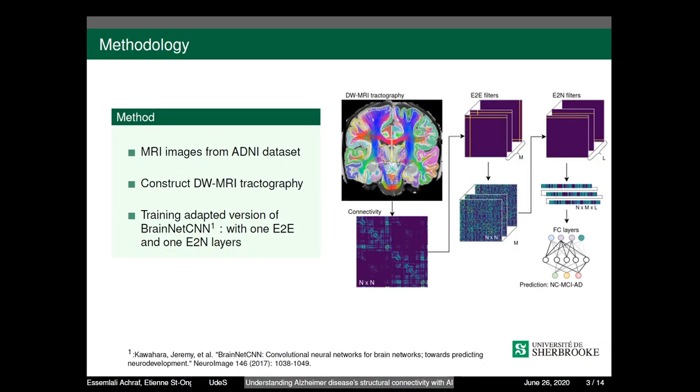We trained an adapted version of BrainNetCNN by Collins-Brown, formed and constituted of one edge-to-edge layer and one edge-to-node layer, followed by a fully connected network over DWI-MRI tractography constructed using a state-of-the-art pipeline developed by Maxime's team and Scil Lab using MRI images from ADNI dataset. We trained the model using PyTorch and the hyperparameters were fine-tuned using HyperBandster algorithm.